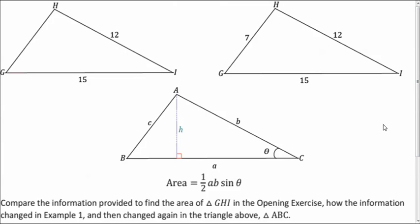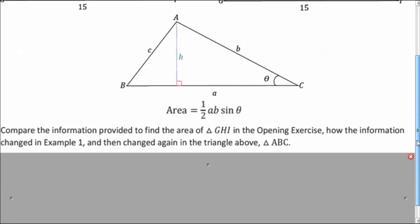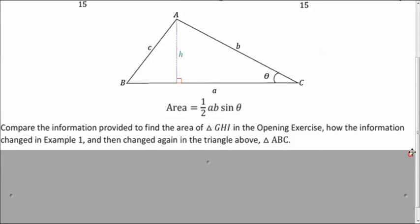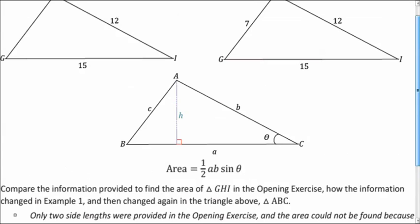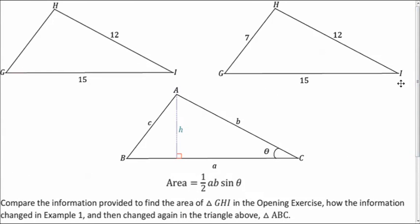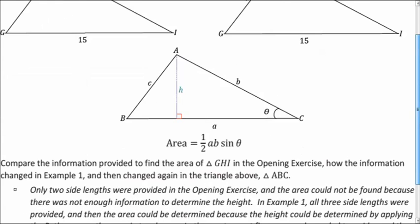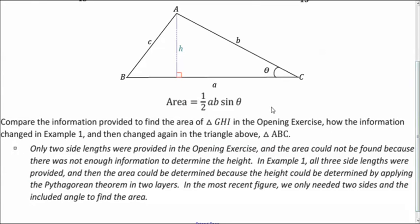So here we have three of the triangles we've been looking at. And how are they different? Well, the first one, we couldn't find the area. And the second one, we found the area. Since we had three sides, we could use Pythagorean theorem. And then going to the last one, all we needed were two sides. And this angle in between is going to let us figure out the area. So the last formula is nice in that you only need two sides and an angle. You don't have to use Pythagorean theorem to figure out the height.